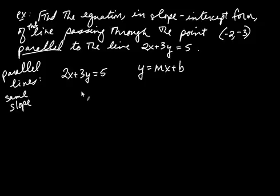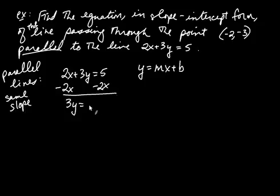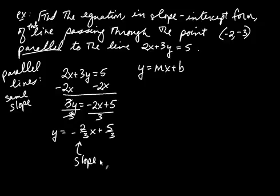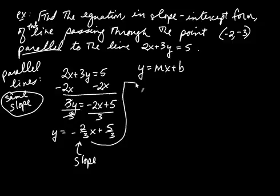How do we find the slope of 2x plus 3y equals 5? One way is to put it into slope-intercept form. Subtracting 2x from both sides gives 3y equals negative 2x plus 5. Dividing both sides by 3 gives y equals negative two-thirds times x plus five-thirds. This is the slope of the other line. Since parallel lines have the same slope, my slope m equals negative two-thirds.